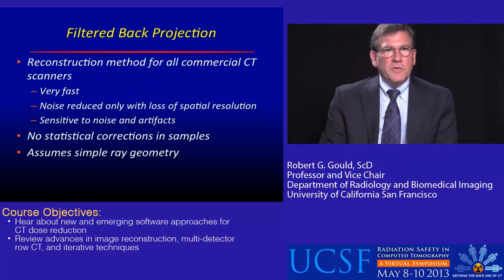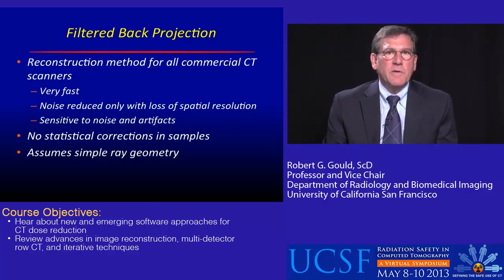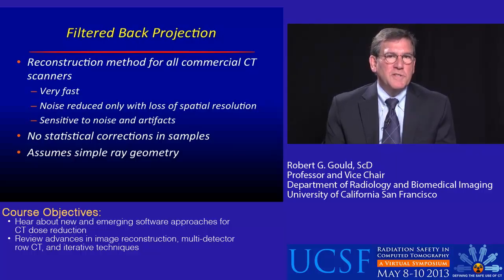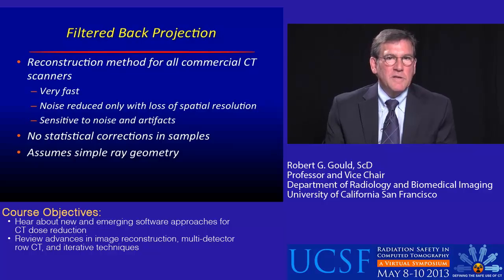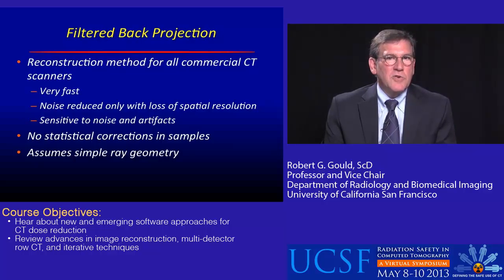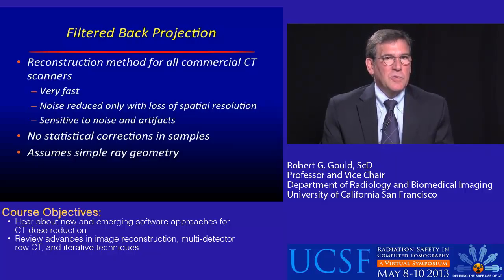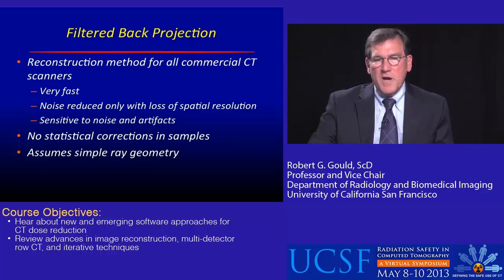Filtered back projection is the method used on all commercial CT scanners. It is very fast. It does allow noise reduction, but you have to trade off spatial resolution to achieve that, and it is sensitive to noise and artifacts. There are no statistical corrections in the samples — it assumes simple ray geometry.